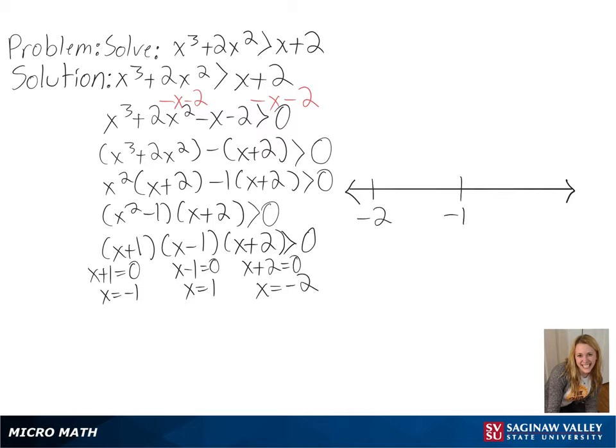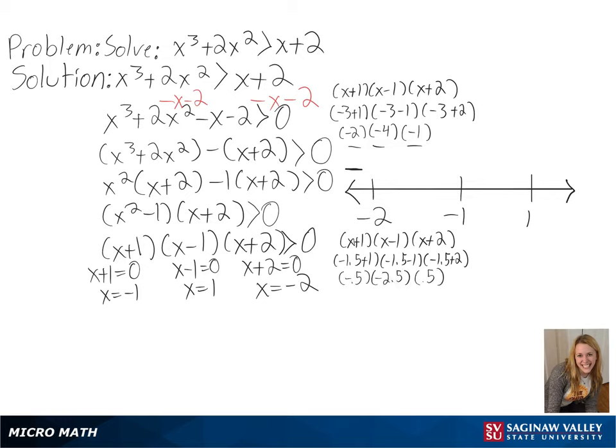A number we can use to the left of negative 2 is negative 3. And plugging this into our expression, we get a negative number. A number we can use in between negative 2 and negative 1 is negative 1.5. And plugging this into our expression, we get a positive number.